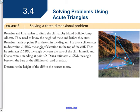Then he estimates angle CBD, the angle between the base of the cliff, himself, and Diana, and he estimates that to be 60 degrees. Diana estimates angle CDB, the angle between the base of the cliff, herself, and Brendan to be 50 degrees. Determine the height of the cliff to the nearest meter.